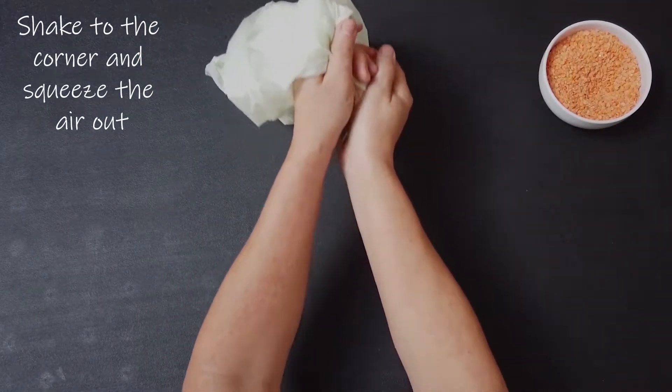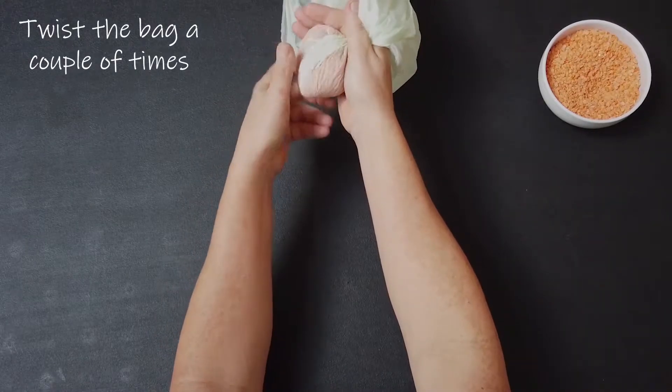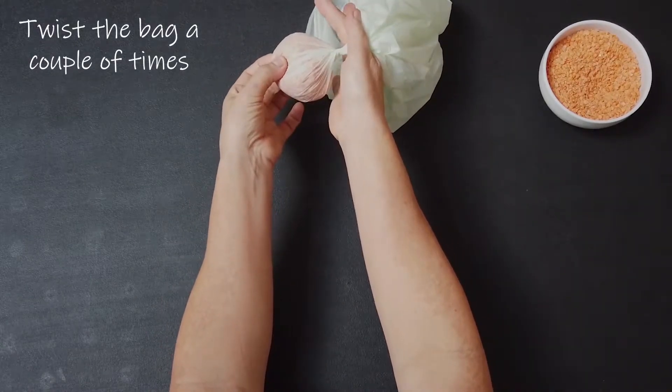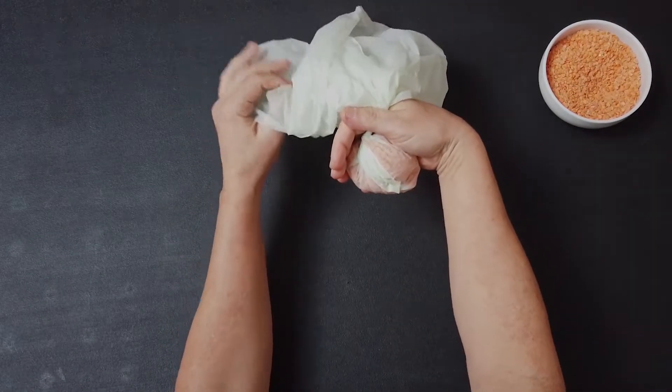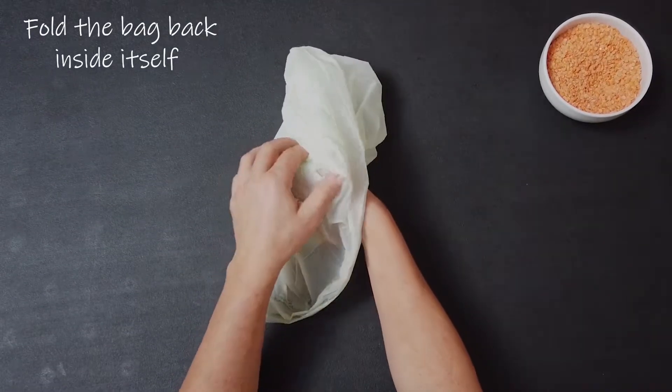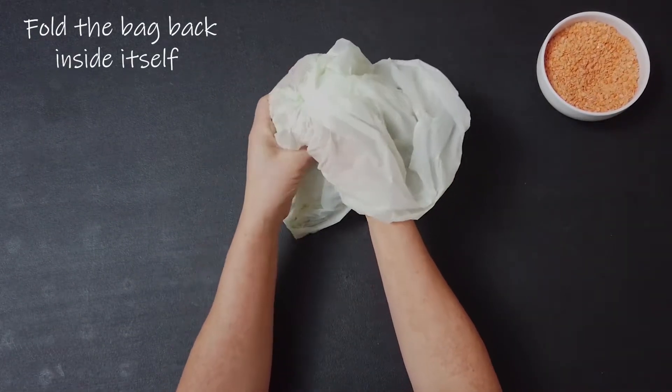Once you've shaken it to the corner, just gently squeeze all the air out of it. Twist it a couple of times so it's fully twisted and you're going to put it back inside itself. Shake it down.